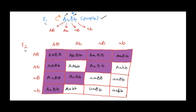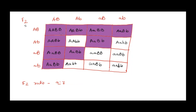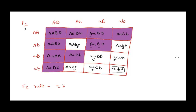When we self-fertilize the F1, the gametes are: capital A capital B, capital A small b, small a capital B, and small a small b. In the F2 Punnett square, wherever we see homozygous recessive condition of either gene — small b small b, or small a small a — there is no pigmentation. Everywhere else, even one dominant copy of each gene is enough for purple pigmentation. The F2 ratio for duplicate recessive epistasis is 9:7 — nine purple and seven white flowers.